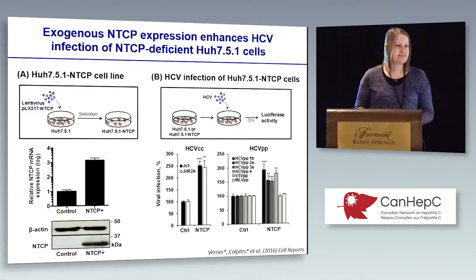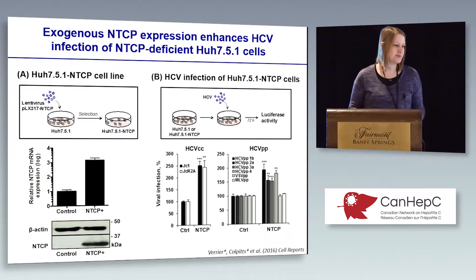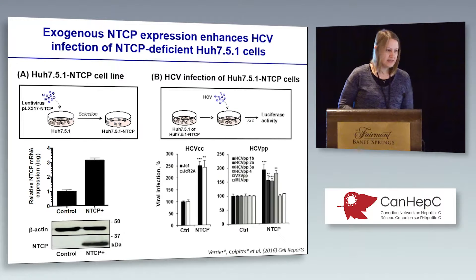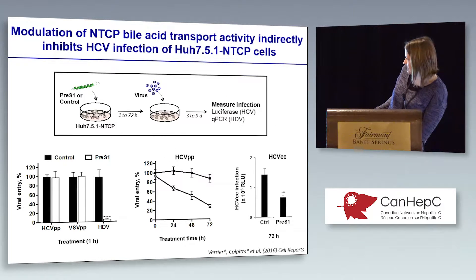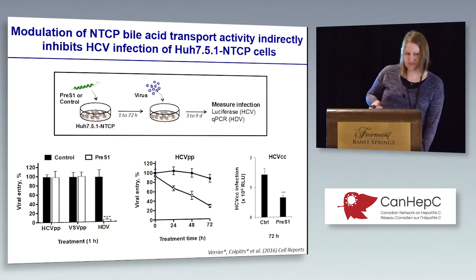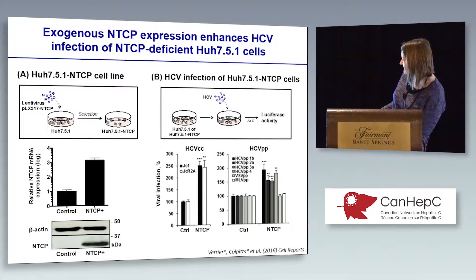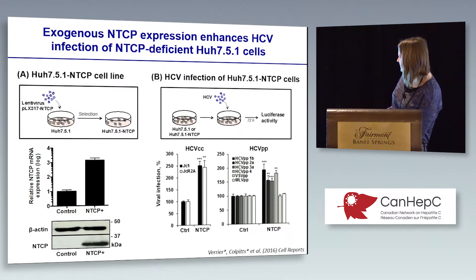We compared HCV infection in the parental cell line versus the NTCP-expressing cell line using both HCV-CC, which is the full life cycle virus, and HCV pseudoparticles, which recapitulate the entry steps of HCV only. We can see that expression of NTCP enhances HCV-CC infection by about 2.5-fold, and similarly enhances HCV-PP entry by about 1.5 to 2-fold.